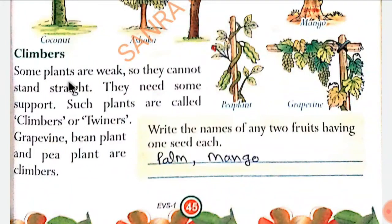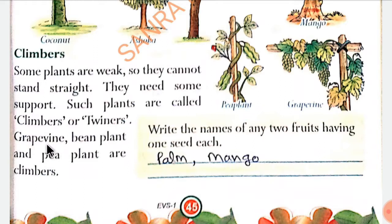Climbers — climbers kya hote hai? Some plants are weak, jo plants se kuch kamzore hote hai, so they cannot stand straight, wo seedhe nahi khade ho sakti. They need some support, unhein kuch support ki zaroorat hai. Such plants are called climbers — aise plants ko climbers bolte hai, ya tweeners bhi bolte hai. Grape vine, bean plants and pea plants are climbers. Grapes ka jo plant hota hai woh climber hota hai.